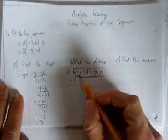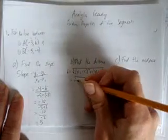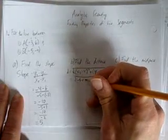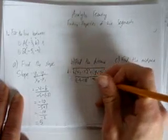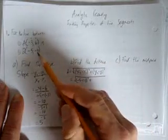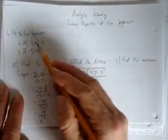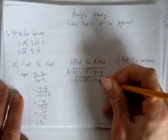What I mean is we already did x2 minus x1, but let's check. x2, that's negative 5, minus x1 minus negative 3, all that squared, plus y2, that's negative 4, minus y1, which is negative 6, all squared.